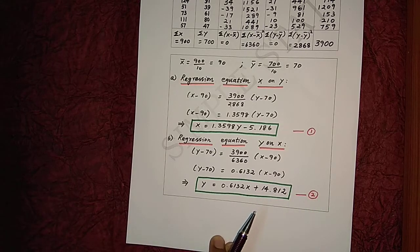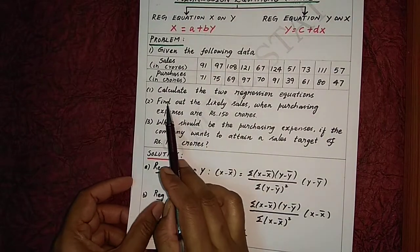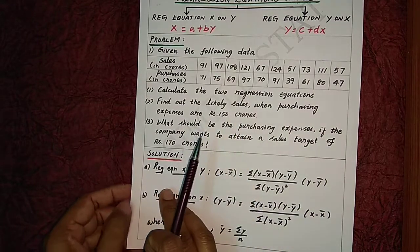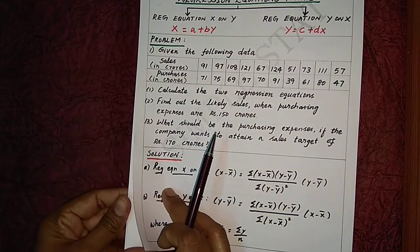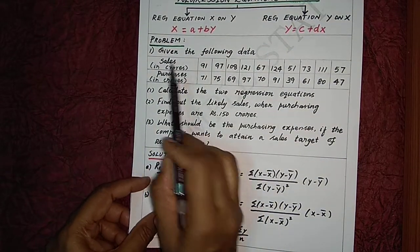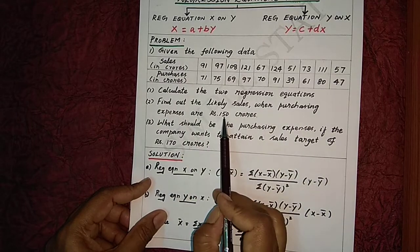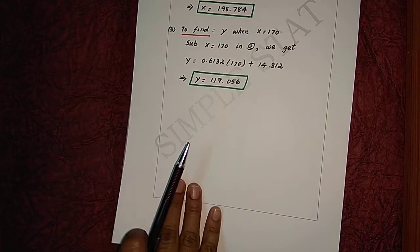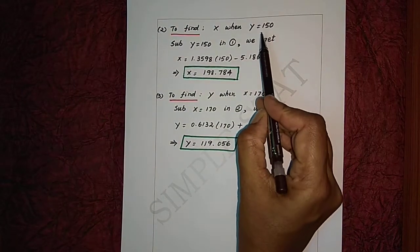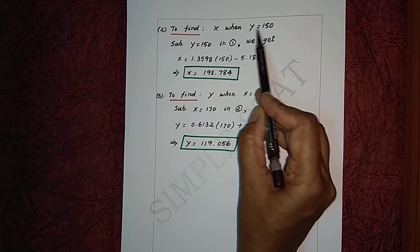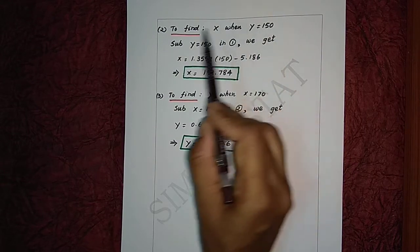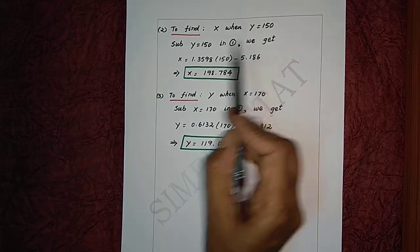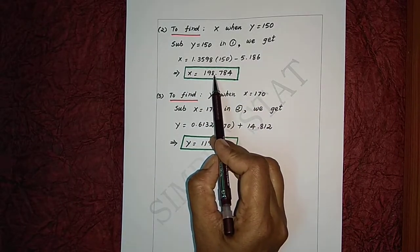Let's now proceed with question number 2. Find out the likely sales when purchasing expenses are Rs. 150 crores. To find x when y = 150, we use the regression equation x on y, because y is the known value here. Substituting y = 150 into regression equation x on y, we get x = 198.784.